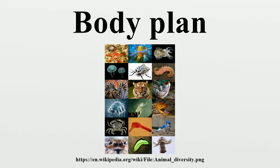Haeckel, 1866. Ernst Haeckel, in his 1866 General Morphologie der Organismen, asserted that all living things were monophyletic, being divided into plants, protista, and animals. His protista were divided into monera, protoplasts, flagellates, diatoms, myxomycetes, myxocystodes, rhizopods, and sponges. His animals were divided into groups with distinct body plans, which he named phyla. Haeckel's animal phyla were coelenterates, echinoderms, articulata, mollusks, and vertebrates.